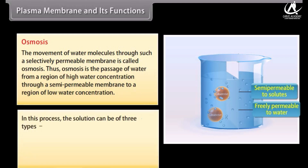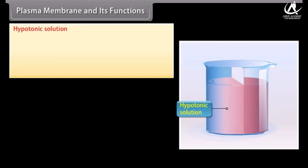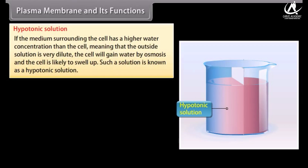In this process the solution can be of three types: hypertonic, isotonic, and hypotonic. If the medium surrounding the cell has a higher water concentration than the cell — meaning the outside solution is very dilute — the cell will gain water by osmosis and is likely to swell up. Such a solution is known as a hypotonic solution.